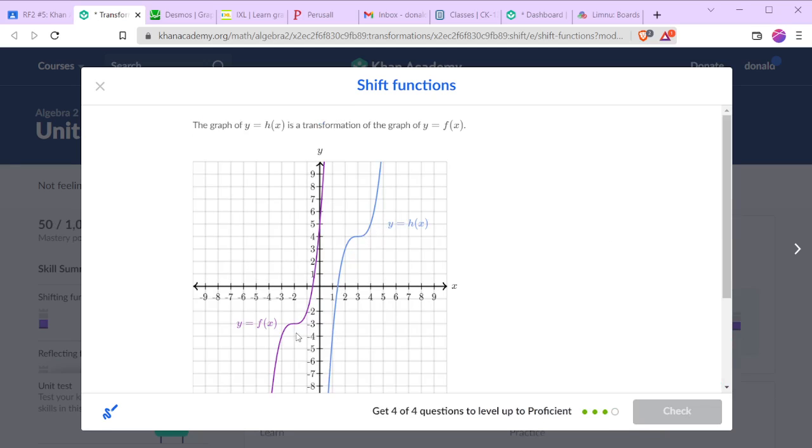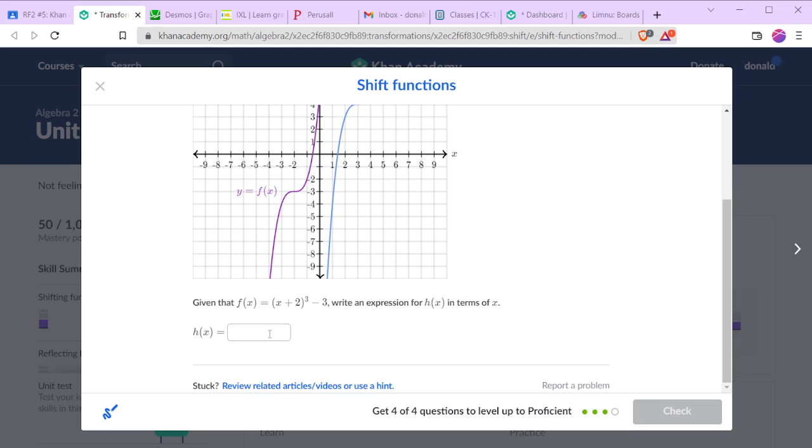Now finally, h is a transformation of f. So if we look at that critical point where it seems to flatten, that was at negative two, negative three in the original function. Now it's at three, four. So this has been translated five units right and seven units up.